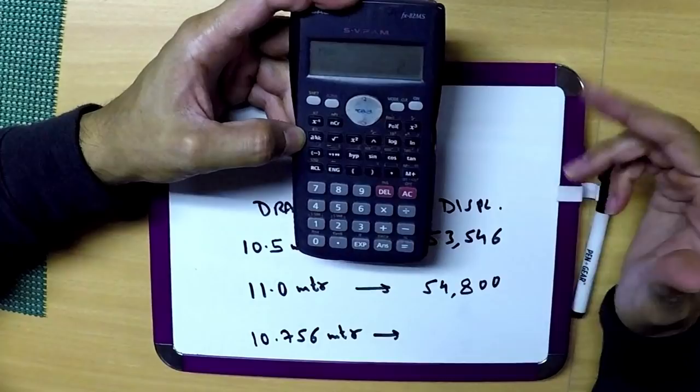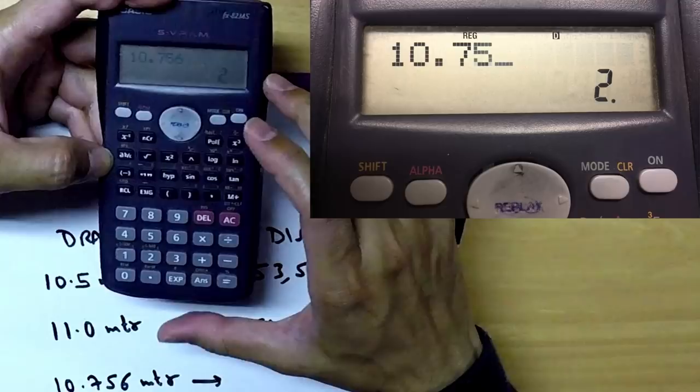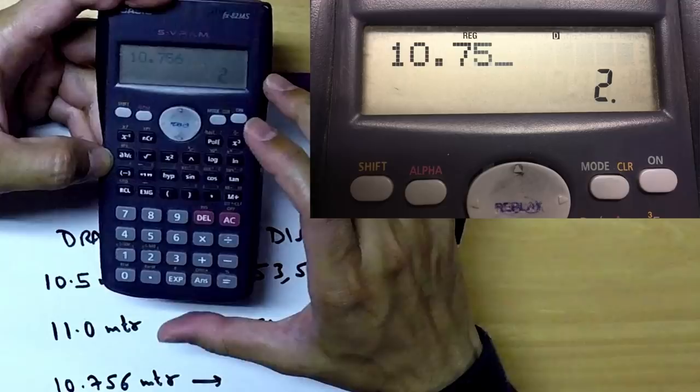Now how to get the result? You need a result for 10.756. You press 10.756. Now you have to press shift and 2. Shift 2, you will end up in a screen like this. Go right till the end using these arrow keys.